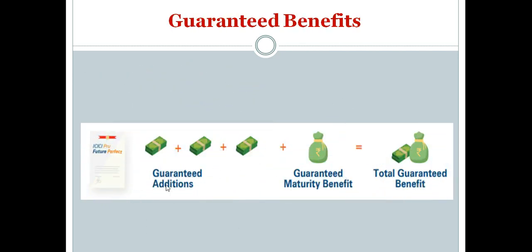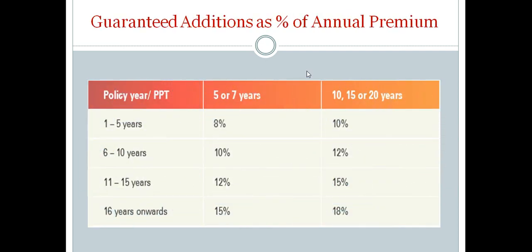Guaranteed benefits consist of guaranteed additions and guaranteed maturity benefits. Guaranteed additions get added to your policy each year — for a 20-year policy term, this fixed amount gets added each year for the entire policy term. Guaranteed maturity benefit gets added only at maturity. Since premium payment term is 20 years and policy term is 25 years, you will get 18% of your annual premium added per annum to your policy.